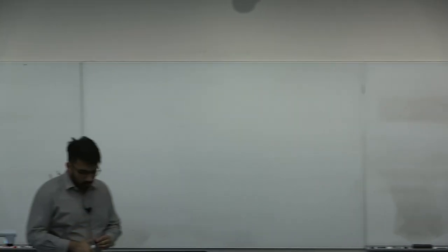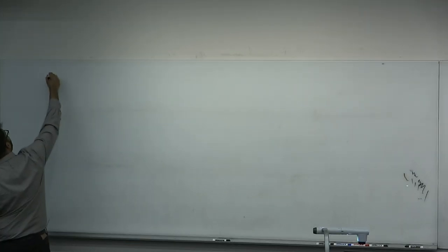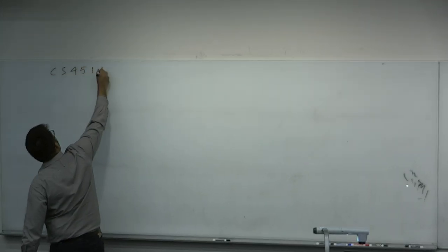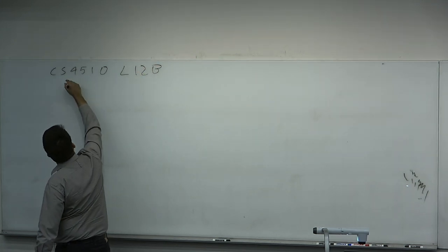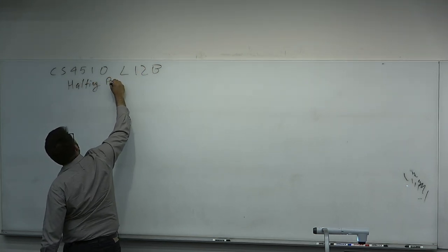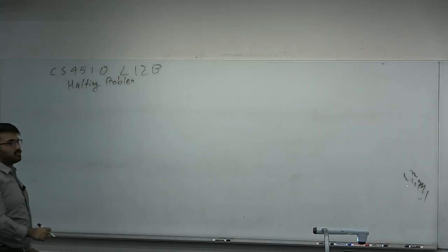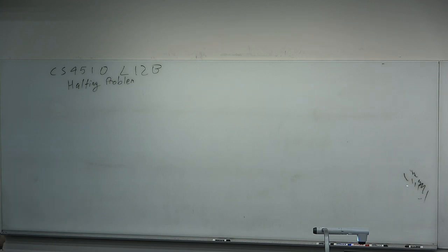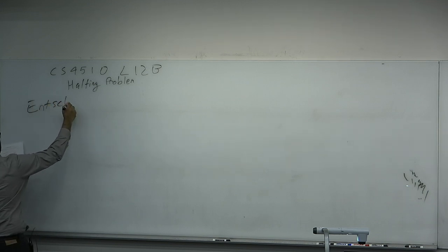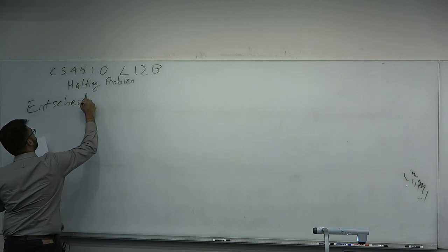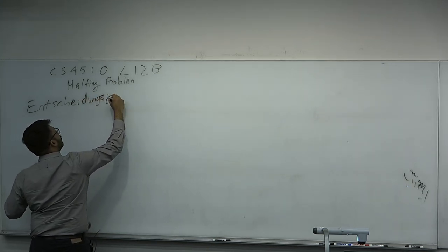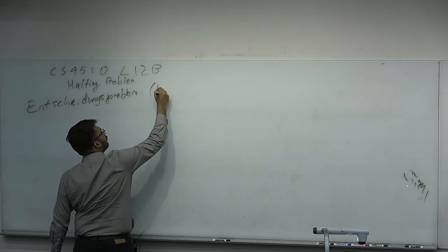Welcome back to CS4510. Let's talk about what's going on in this second half. This is CS4510, I think it's L12b. The topic is the halting problem. We just did a little course on logic — we proved that no axiomatic system can be both consistent and complete, in a sort of dramatic fashion, ending the dream of many. Hilbert had one problem left over called the Entscheidungsproblem, which basically means the decision problem. We'll call this Hilbert's decision problem.